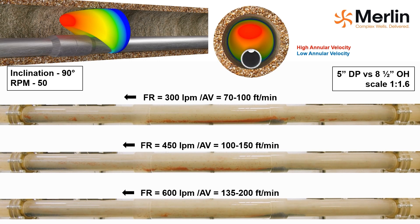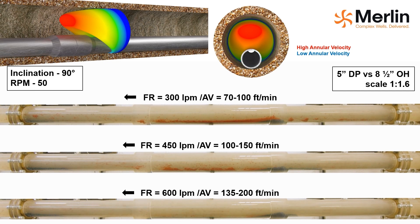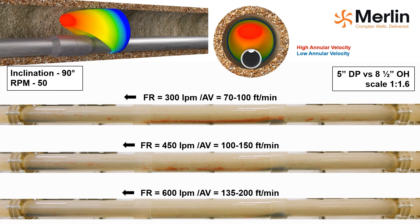The flow loop test sections shown in these video clips are 3 meters long and include an internal pipe positioned eccentrically on the low side, which is rotated at speeds up to 150 RPM. The flow loop dimensions represent an equivalent configuration of 5-inch drill pipe in an 8.5-inch hole with a scale of 1 to 1.6. To show the impact of an interval of enlarged hole, the middle section is represented by the equivalent of a 9.3-inch hole. Xanthan gum has been used as a viscosifier in the flow loop fluid, which is why it is cloudy, obscuring the view of the internal pipe.